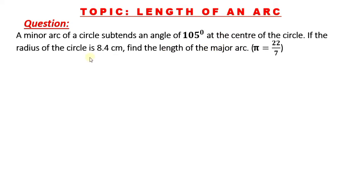The question goes, a minor arc of a circle subtends an angle of 105 degrees at the center of the circle. If the radius of the circle is 8.4 centimeters, find the length of the major arc given that π is 22 over 7.